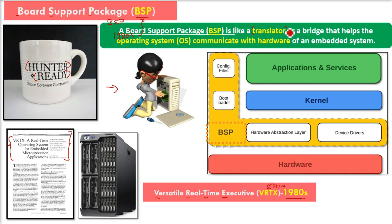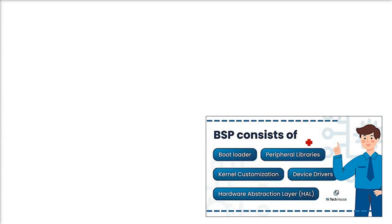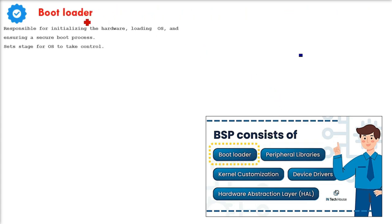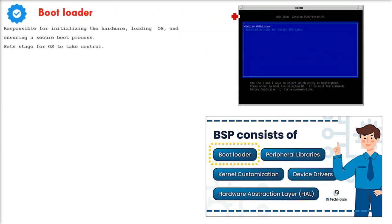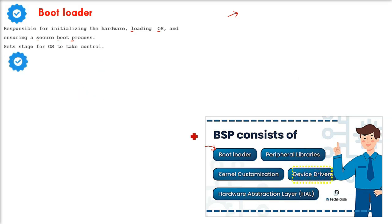A board support package, BSP, is like a translator or a bridge that helps the operating system communicate with the hardware of an embedded system. The key components and functions of a BSP include the bootloader. The bootloader is responsible for initializing the hardware, loading the OS, and ensuring a secure boot process. The bootloader sets the stage for the OS to take control.